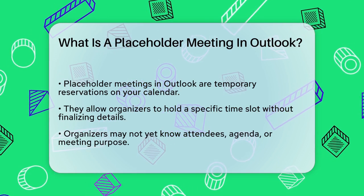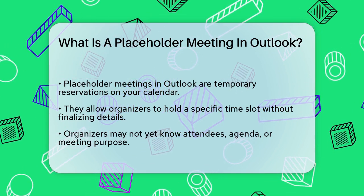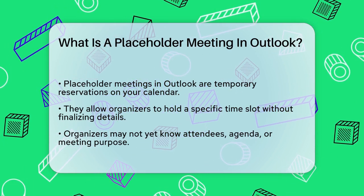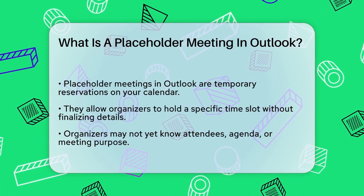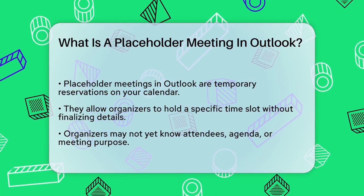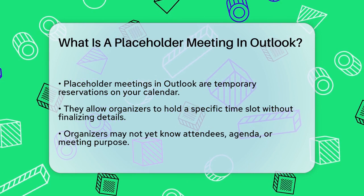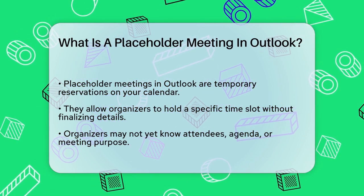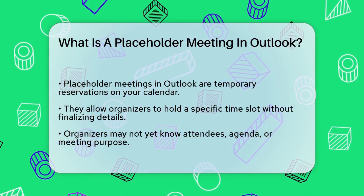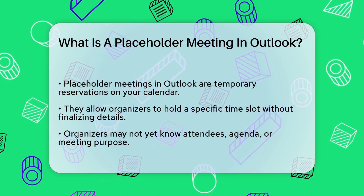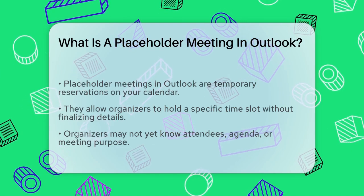A placeholder meeting in Outlook is essentially a temporary reservation on your calendar. It's a way for the meeting organizer to hold a specific time slot without finalizing all the details, such as the attendees, subject matter, or even the exact purpose of the meeting.